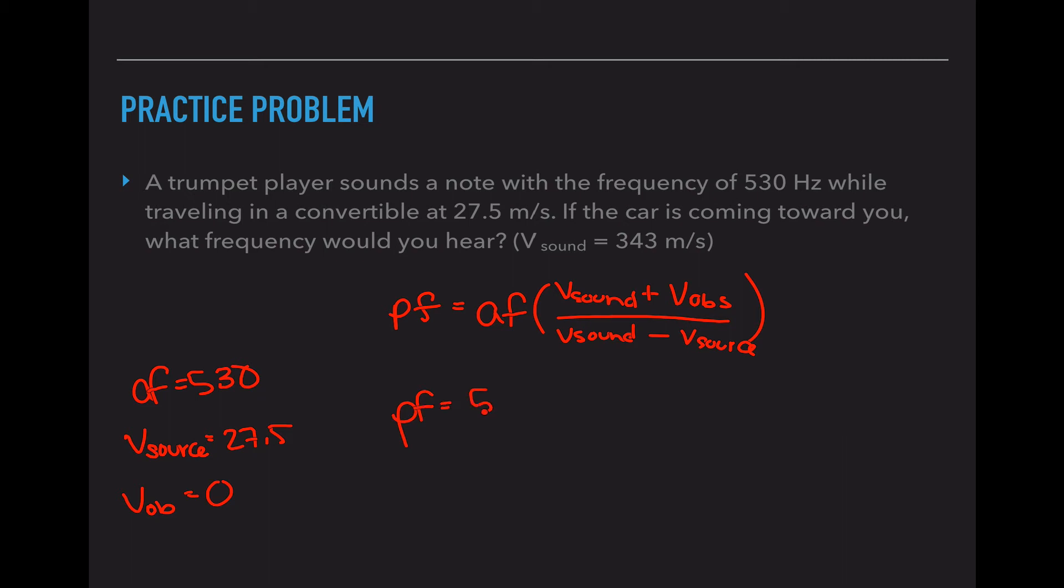So the perceived frequency is 530, 343 plus 0 over 343 minus, and now I'm going to plug in that plus 27.5 because that source is moving towards me or towards the observer. So I'm going to put in a plus 27.5 in that little area. So the perceived frequency is 530, 343... So the perceived frequency is 530 times 1.087. So the perceived frequency is 576.11 hertz.